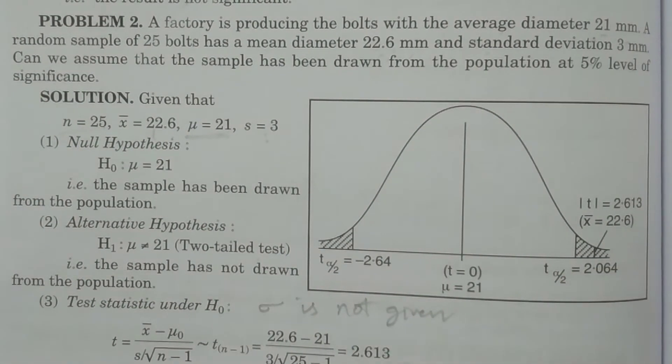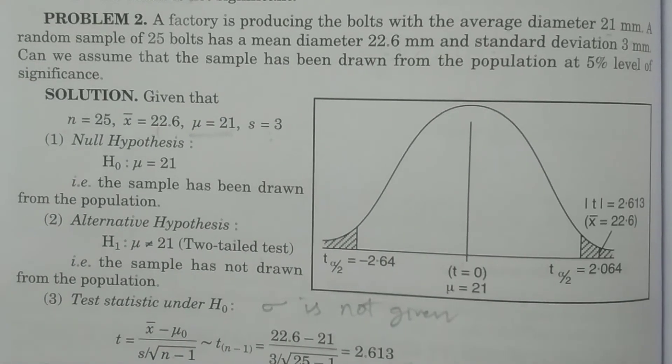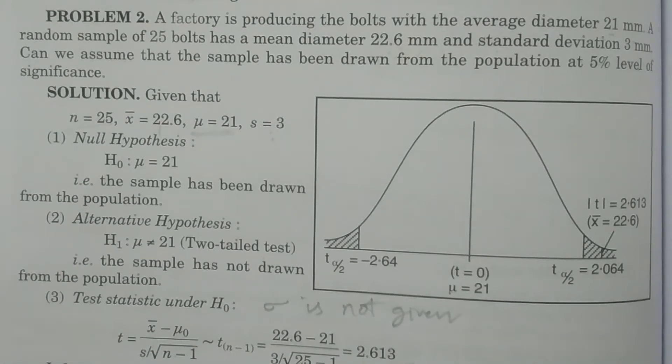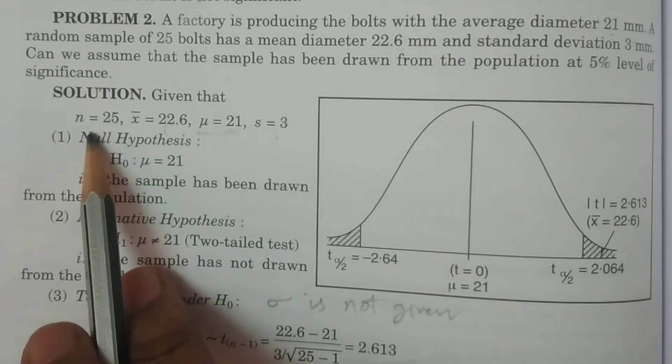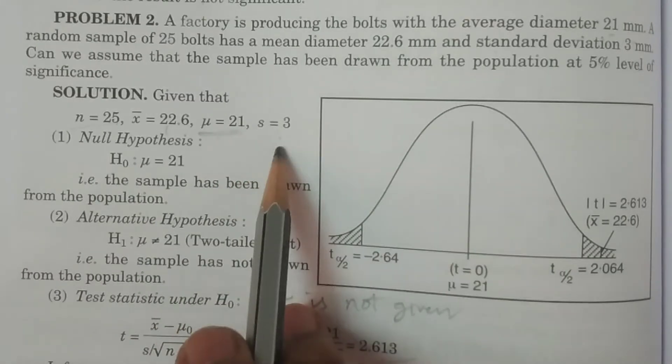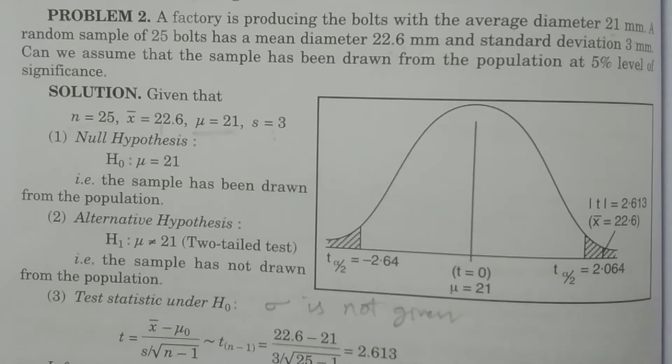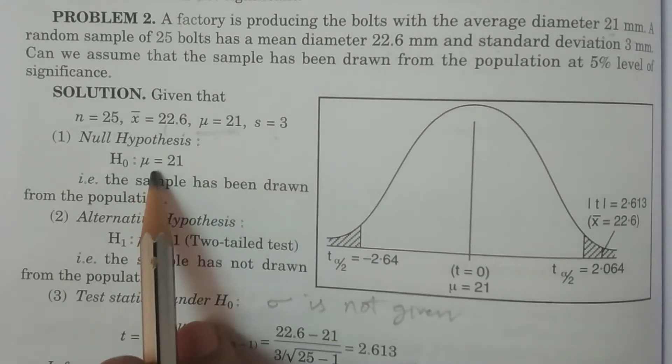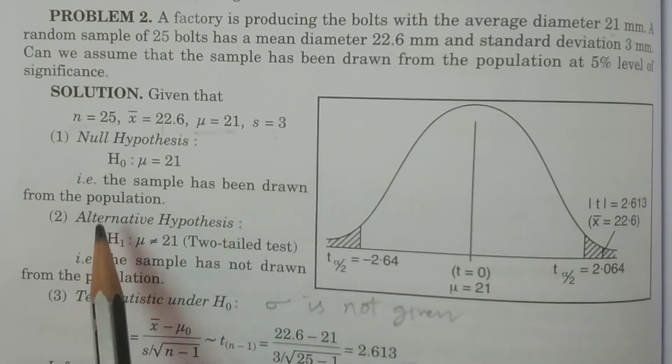Sample population is drawn. So if you first change the data. X bar, Mu. You have to write down the null hypothesis. Null hypothesis H naught. H naught value and mu is equal to 21, that is the sample has been drawn from the population.